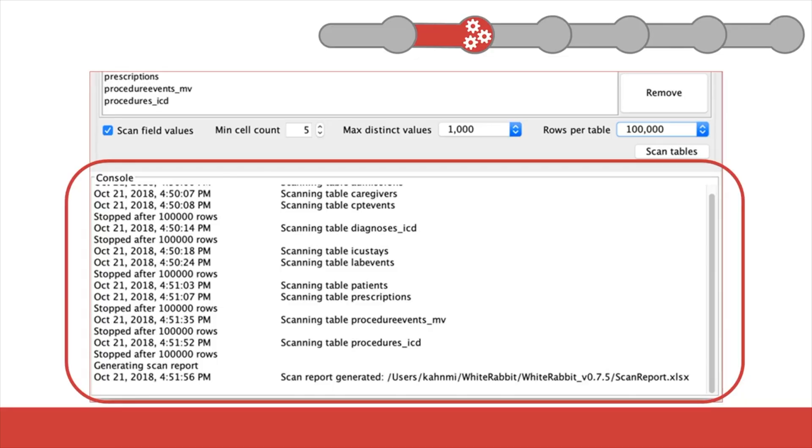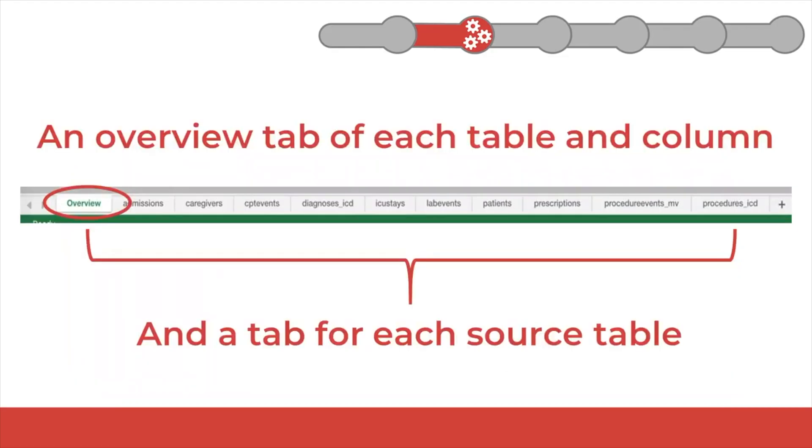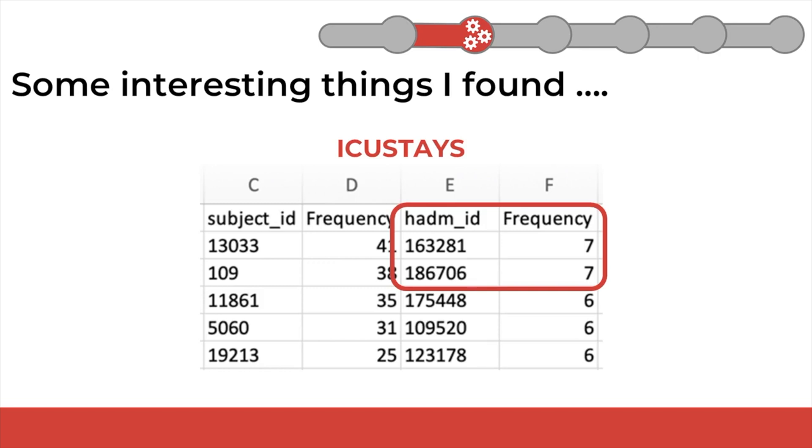Another tool I use is White Rabbit. It's a small Java application used to analyze the structure and contents of a database. It helps with designing the ETL. Basically you upload source data from a database, CSV, or SAS files, White Rabbit runs it, and gives you a scan report with all the details you need — like information on tables, fields, and the frequency distribution of values.